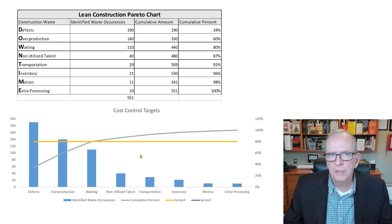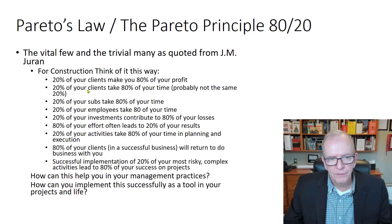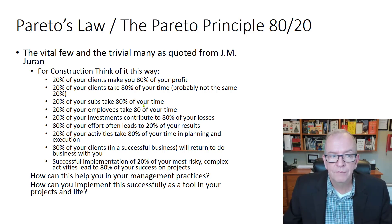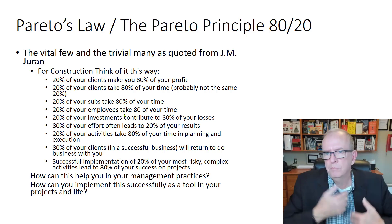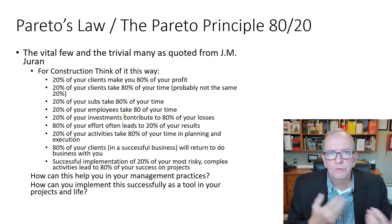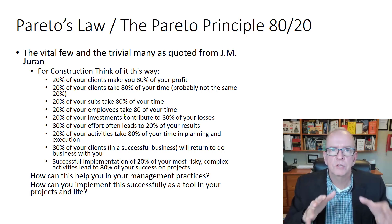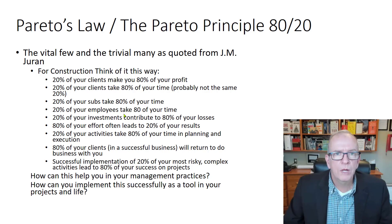It's a great starting point for identifying what you should go after. 20% of your clients take 80% of your profit. 20% of your clients take 80% of your time. 20% of your subs take 80% of your time. 20% of your employees take 80% of your time. Maybe you are micromanaging and they're not able to do things for themselves — so maybe you need to back off or spend extra time training them so that they don't need you.